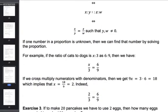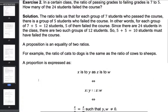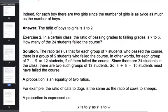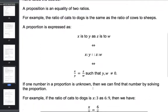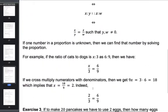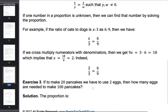For example, here we have this example: In a certain class, the ratio of passing grades to failing grades is seven to five. How many of the 24 students failed the course? Not only do we give you an answer, but we give you the entire explanation and rationale. We break it down so you can fully understand, because if you know how to solve one problem, you'll be able to figure out all of the problems.